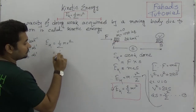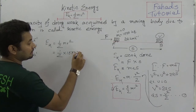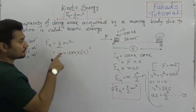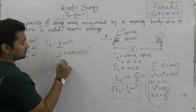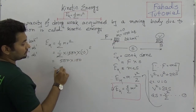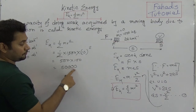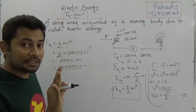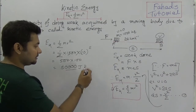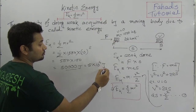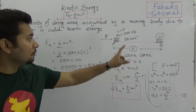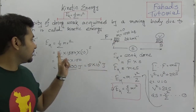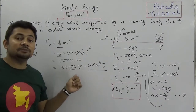So EK = ½ × 1000 × (10)². That is ½ × 1000 × 100 = 500 × 100 = 50,000 joules. In scientific notation, that is 5 × 10⁴ joules. So the kinetic energy acquired by a 1000 kg car moving at 36 km/h is 5 × 10⁴ joules.